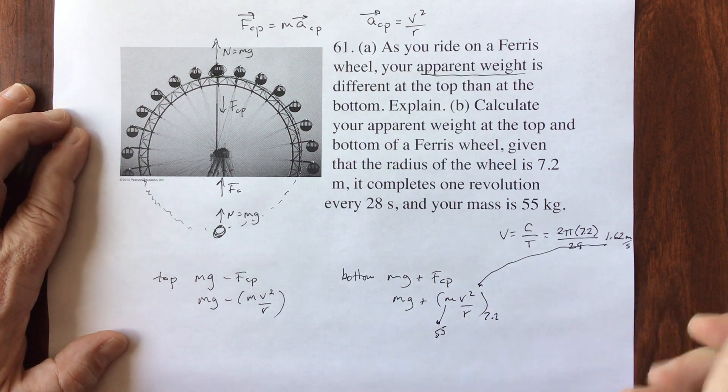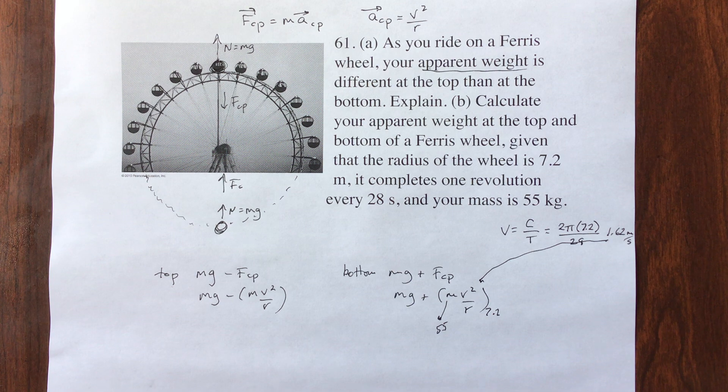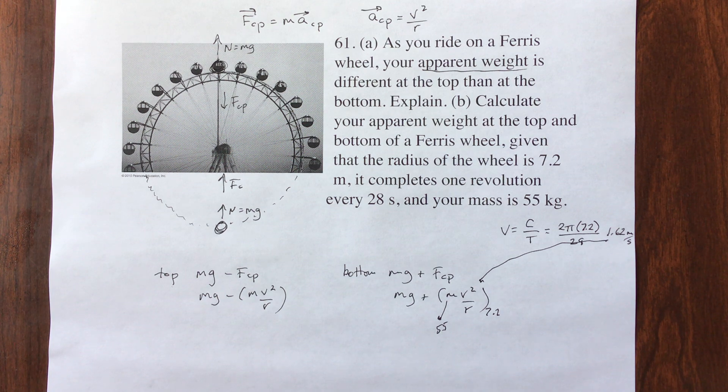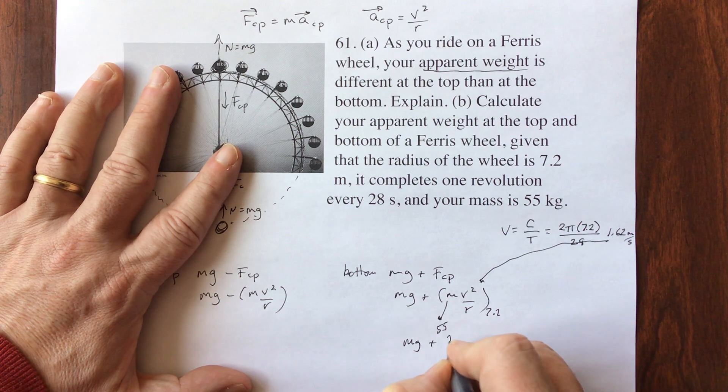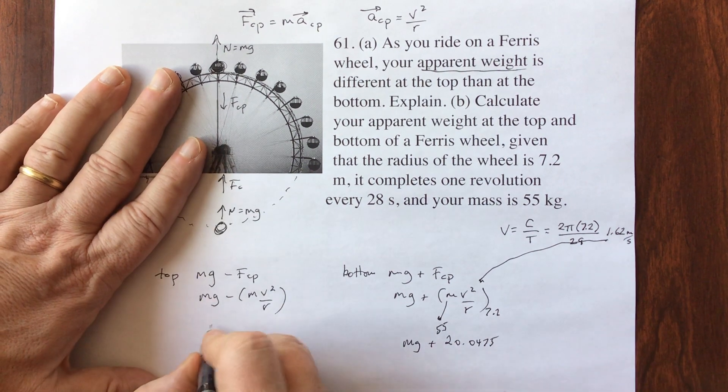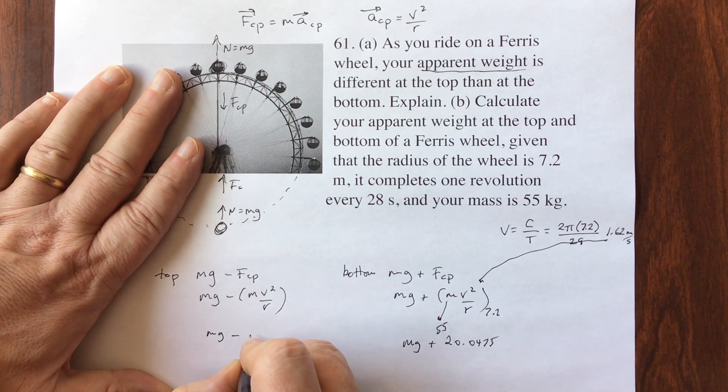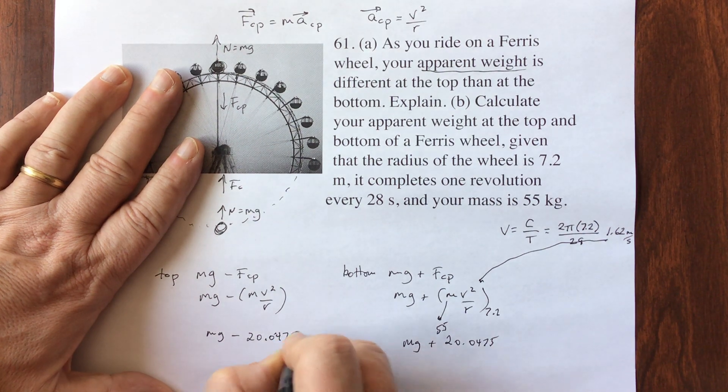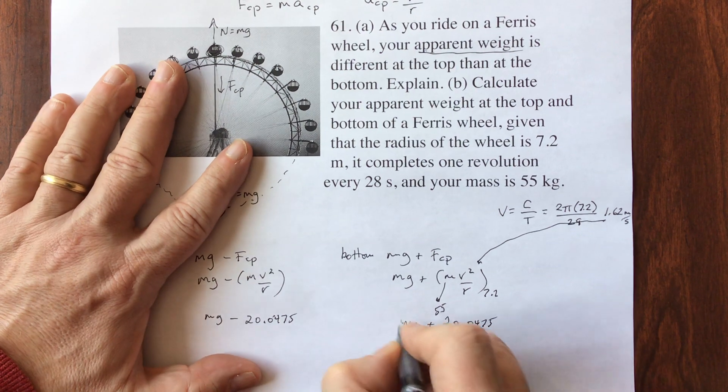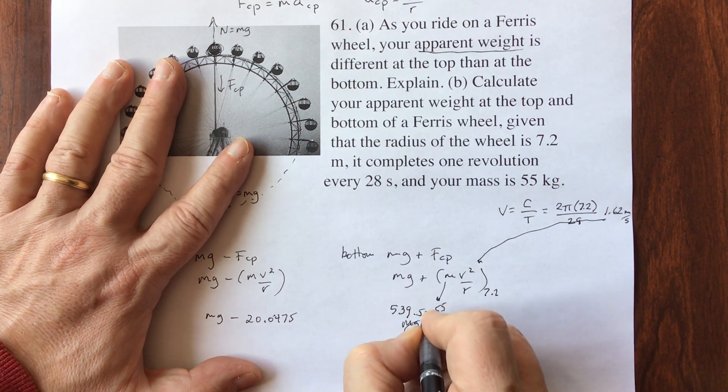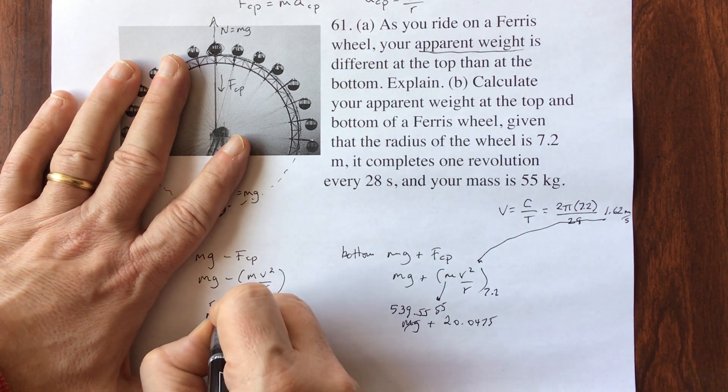7.2 goes in for r, 55 goes in for m. So let's find out what that is. So I have 1.62 squared divided by 7.2 times 55. All right, that means that I have mg plus 20.0475 and mg minus 20.0475, and so what is mg? So m is 55 times 9.81, so this is 539.55.